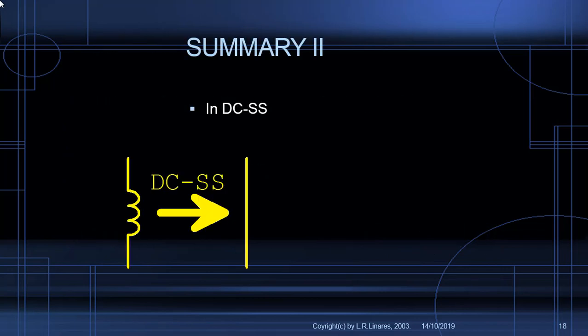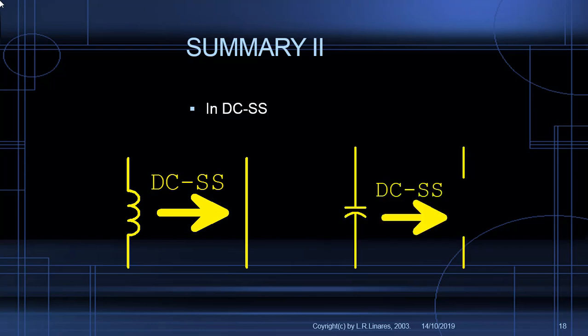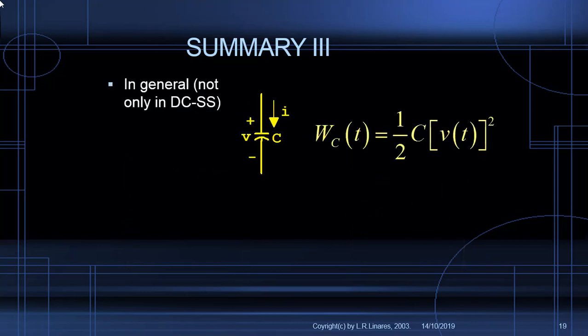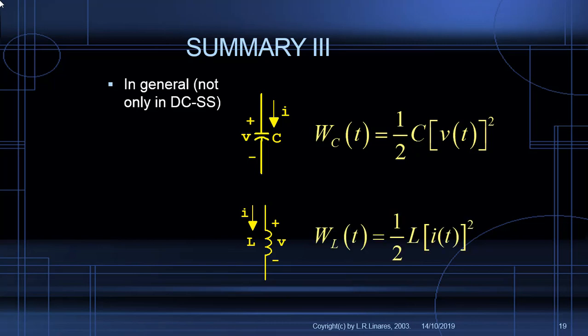In DC steady state we represent an inductor with a wire and a capacitor with an open circuit. In general — not only in DC steady state — the energy in the capacitor is ½CV², and the energy in the inductor is ½LI². Those are general formulas valid as functions of time.